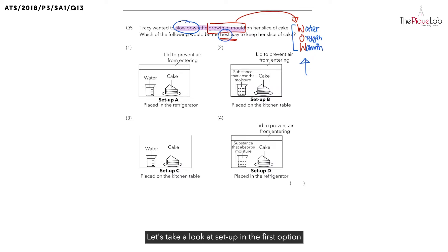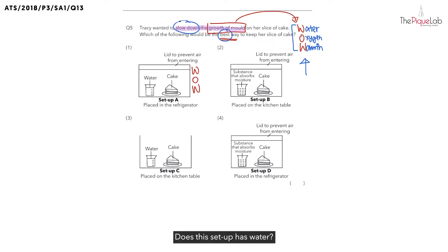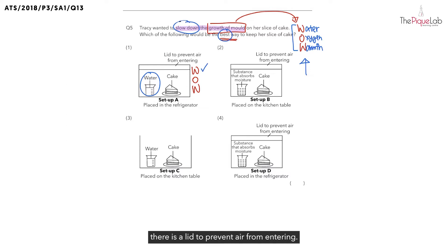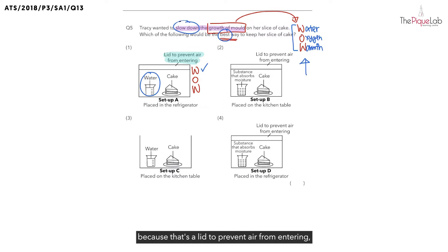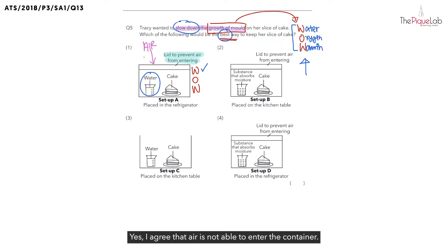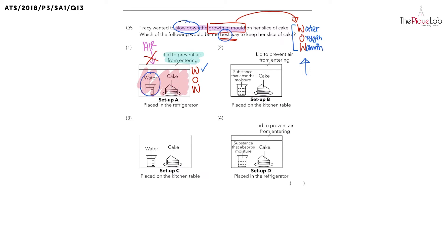Let's take a look at the setup in the first option to see whether the WOW conditions are present. The first W is water. Does this setup have water? Yes, you can see that this setup has water, correct? So water is present. What about the second condition? Oxygen. If you take a look at the setup, there is a lid to prevent air from entering. And because of this, many students would always think that because there's a lid to prevent air from entering, this means that there's no oxygen in the container. But is that really true? I agree that air is not able to enter the container, but is there air present in the container at the very beginning? There is, correct? So actually, oxygen is present in this setup.